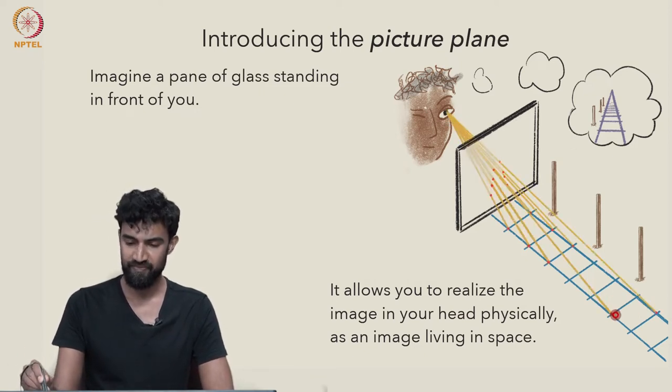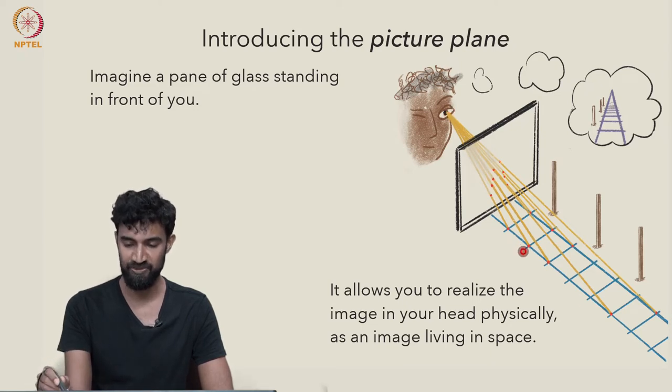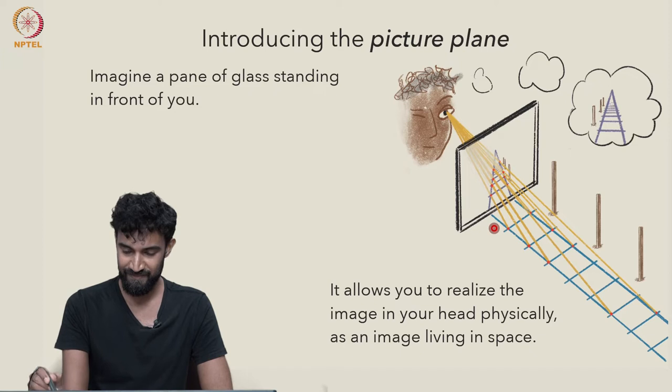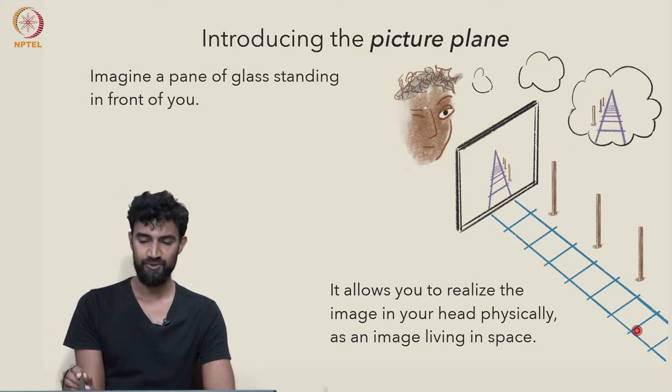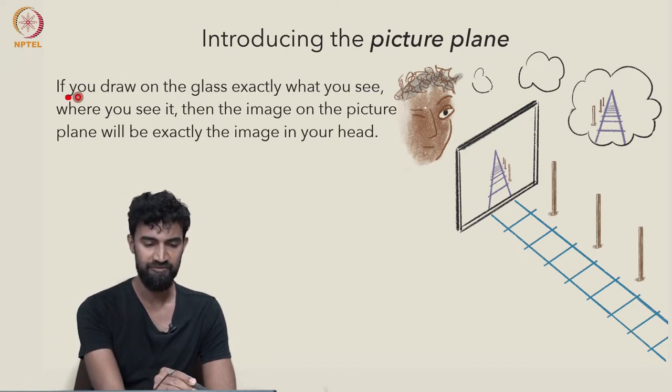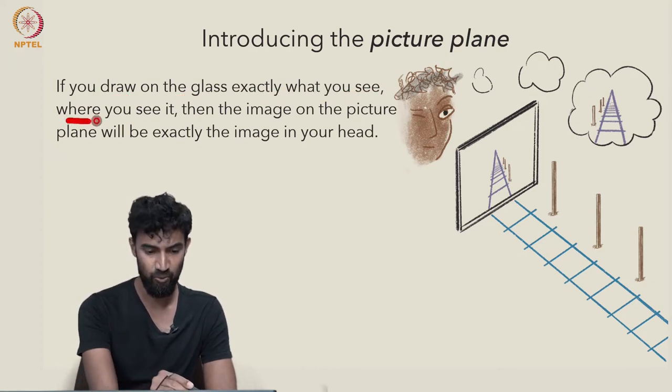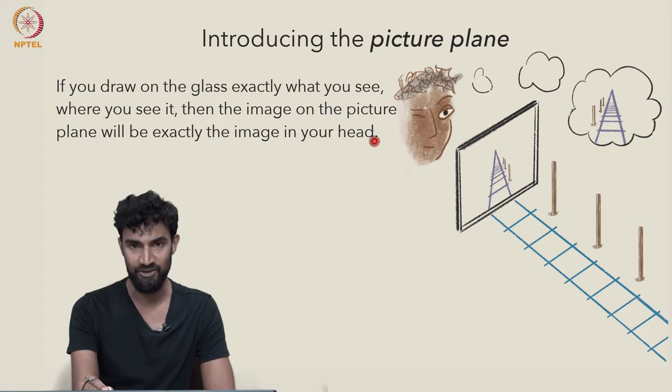The way it does that is that all of these different light rays are bouncing off all of these points in space to your eye, but they're all going through the picture plane. And somehow the points that they go through the picture plane are quite significant. They form an image very similar to the image in your head. So in particular, if you were to draw on the glass exactly what you see, where you see it, then the image on the picture plane will be exactly the image in your head.